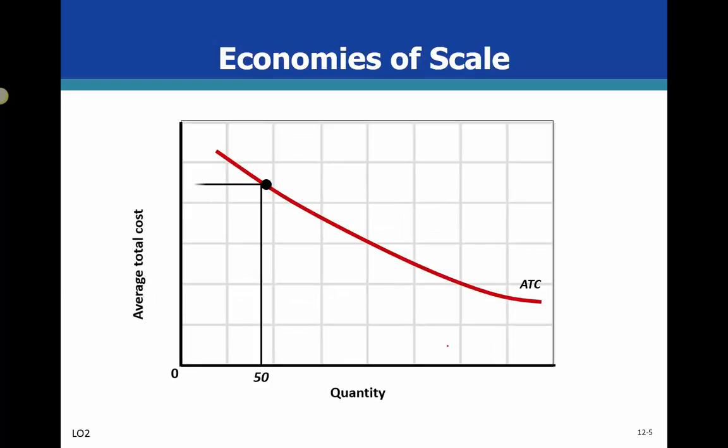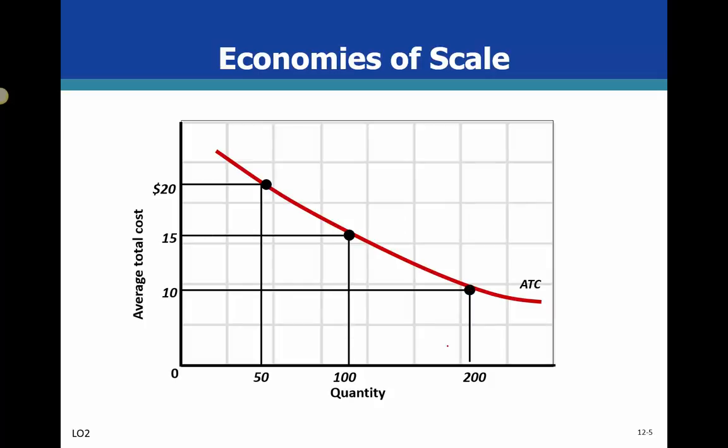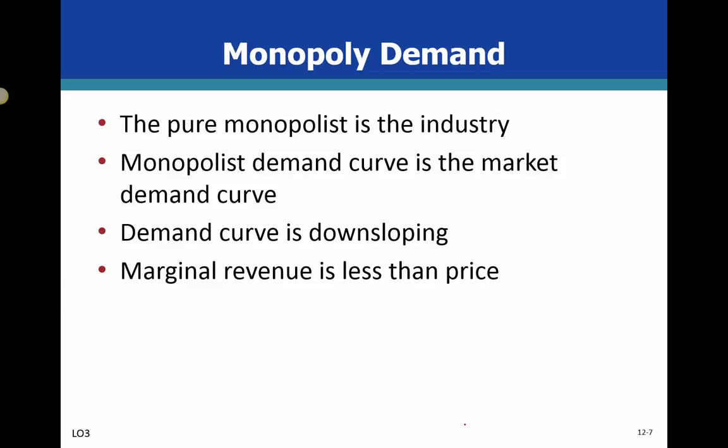There are also pricing and strategic barriers, where you're the first mover and you can price everybody else out of the market. The economies of scale concept shows that as average total cost goes down as production rises, you can produce at a lower price than competitors, creating a natural monopoly.